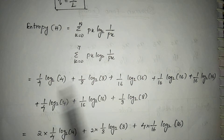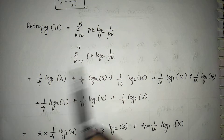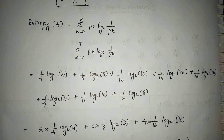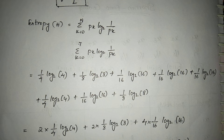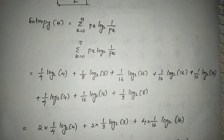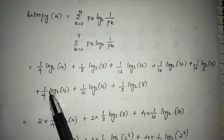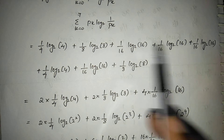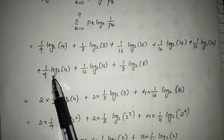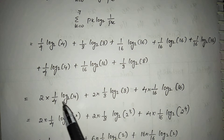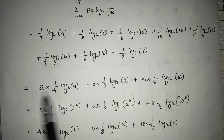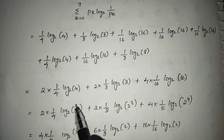Arrange the probabilities for calculation. I have done this in fractional form because it makes calculation easier. We have 1/4 appearing two times, so instead of writing it twice you can write 2 × (1/4) · log₂(4) directly. Similarly, 1/16 appears four times so you can write 4 × (1/16) · log₂(16). If you see a value like 4, convert it as 2².